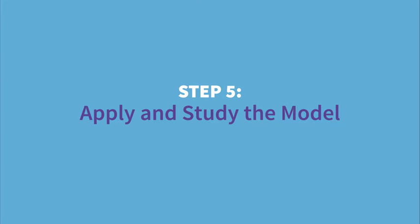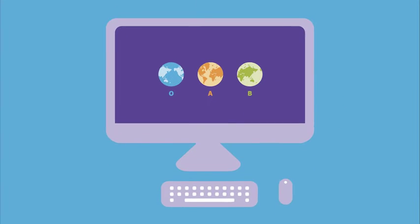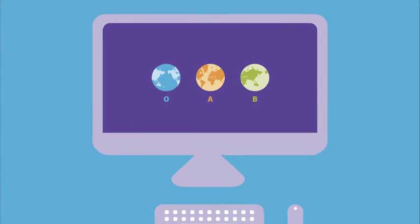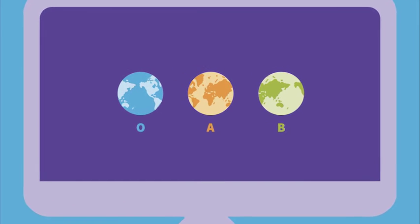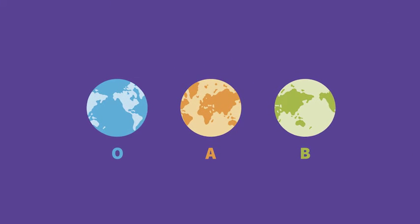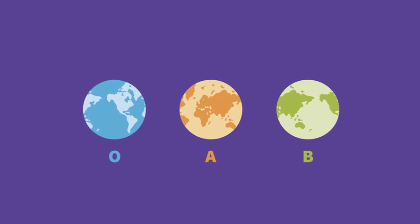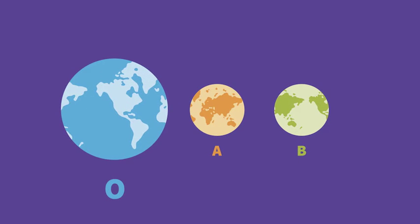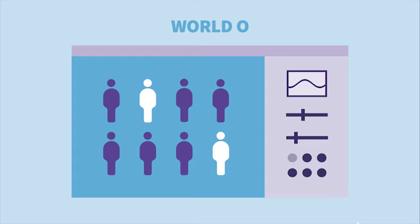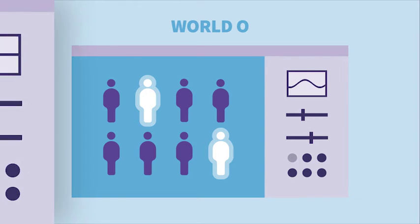Step 5: For our example, let's imagine that researchers create three virtual trial worlds to answer their question: World Zero, World A, and World B. World Zero would represent a real-world strategy where all people presenting with symptoms are screened for syphilis. This control world is called the base case and is what other virtual trials will be compared against.